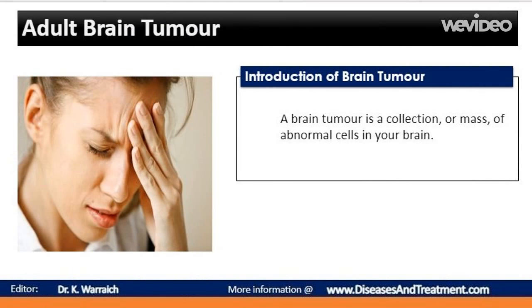A brain tumor is a collection, or mass, of abnormal cells in your brain. Your skull, which encloses your brain, is very rigid. Any growth inside such a restricted space can cause problems.